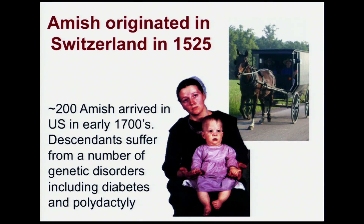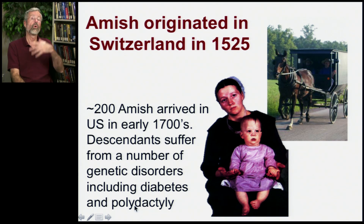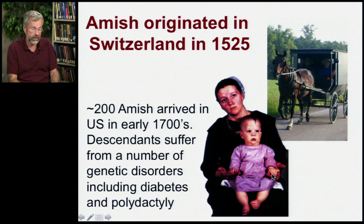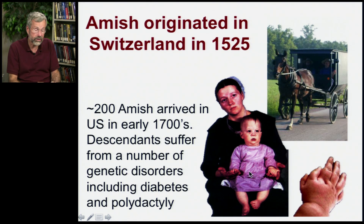We can see founder effects on a small scale in more recent times by looking at the Amish. The Amish originated in Switzerland in the 1500s, and about 200 arrived in the U.S. in the early 1700s. Those 200 individuals happened to possess a couple of rare alleles, and since their descendants only mate with each other, they have a higher incidence of certain genetic disorders — including diabetes and polydactyly, which means having more fingers than normal. An Amish baby here has six fingers on each hand. That's a founder effect.